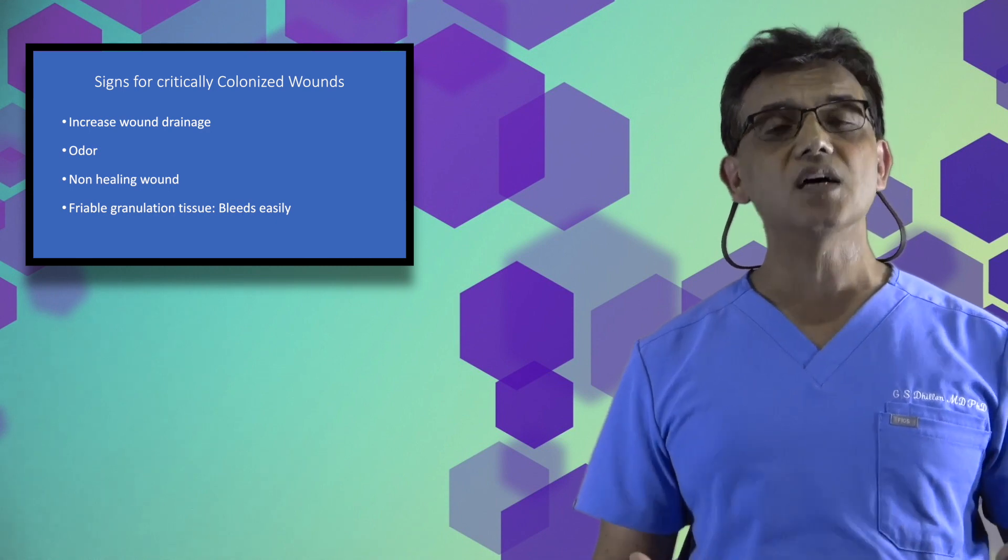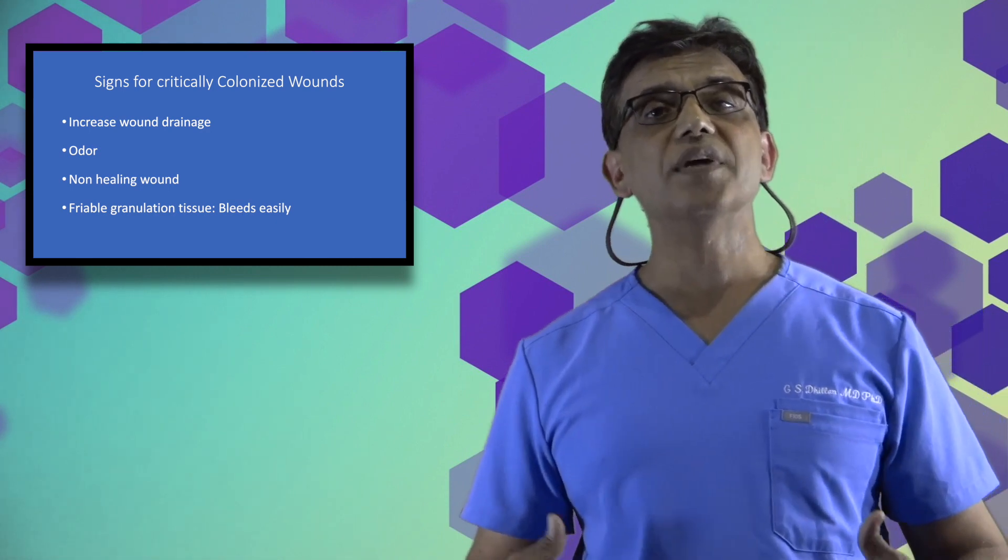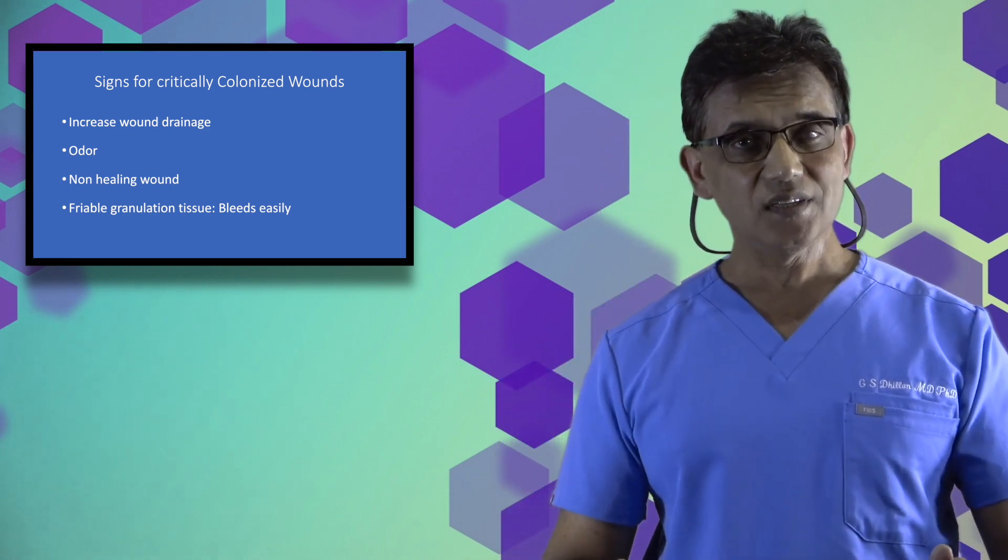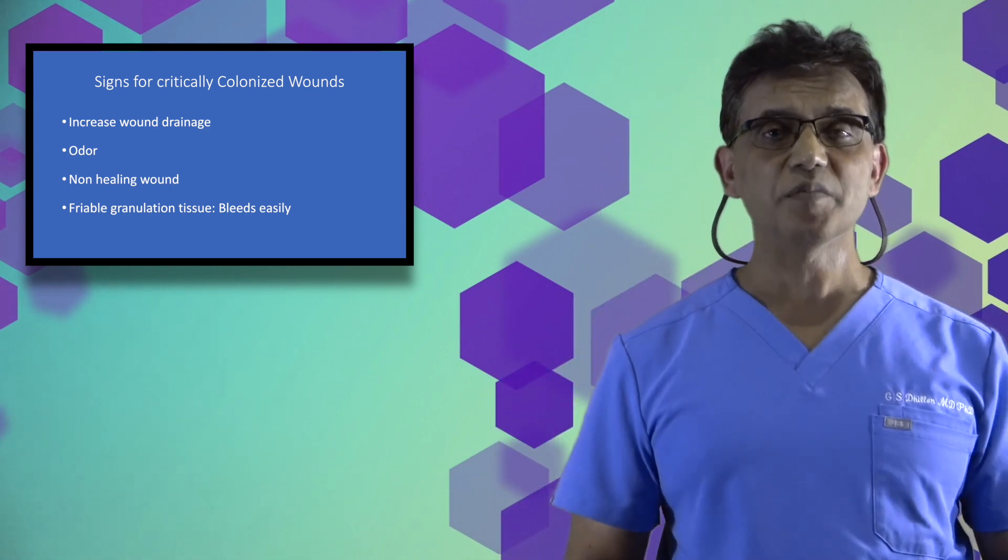So these are the early signs that wounds may be getting critically colonized. If you miss those early signs, then the bacteria begins to invade the surrounding soft tissues, the healthy tissues, and you get cellulitis, erythema, and induration around the wounds. But ideally, you want to assess microbial load before you get to local tissue infection, surrounding tissue infection. So look for signs of critical colonization.